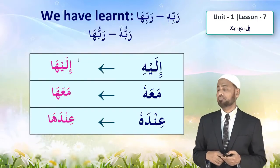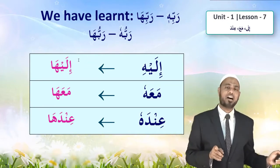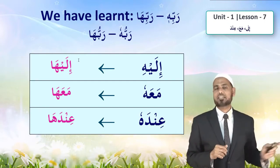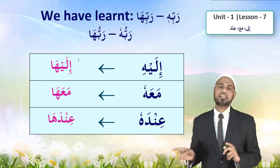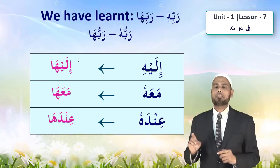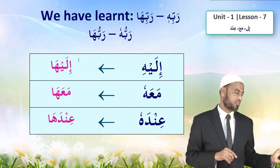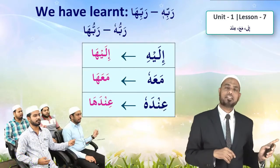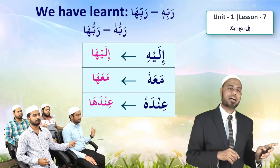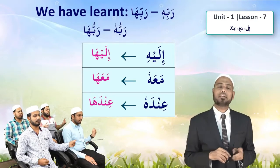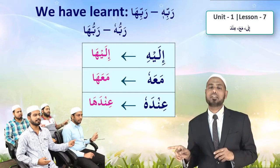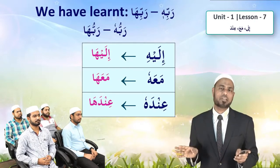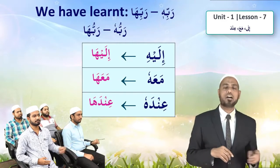Alhamdulillah. We have learned — for example rabbuhu, rabbuha — the feminine 'ha' form. Similarly: feehi, feeha; alayhi, alayha; ilayhi, ilayha; maahu, maaha; indahu, indaha. We are focusing on ha. Can you give me the ha forms? Ilayhi, ilayha; maahu, maaha; indahu, indaha. Ilayhu would be difficult so they made it ilayhi — simple as that.